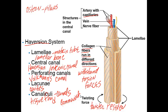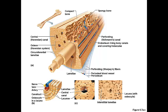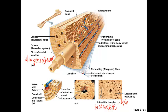Our next slide shows other parts of compact bone. We see interstitial lamellae, which are incomplete lamellae located between the osteons — the word interstitial meaning 'between.' There are also circumferential lamellae, which are located just within the periosteum and extend around the entire circumference of the diaphysis.